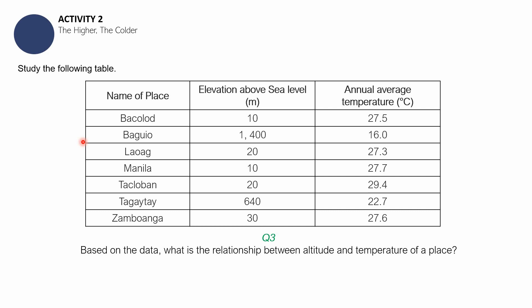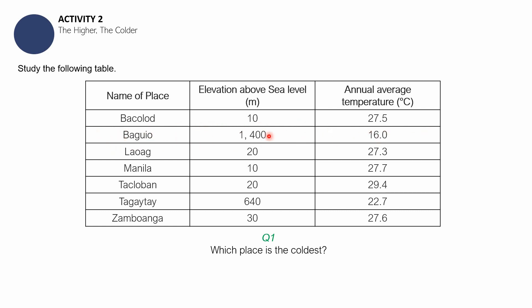I'll be dictating the answers, so pay close attention. The coldest place is obviously Baguio — Baguio City, the City of Pines. Baguio City is considered the coldest place in this activity. It is also elevated at 1,400 meters above sea level — napakataas niya. Baguio City is at 1,400 meters — halos isa kalahating kilometro ang taas niya.